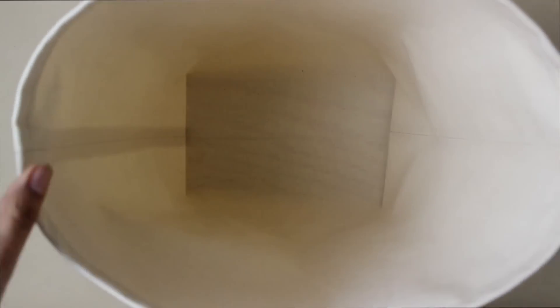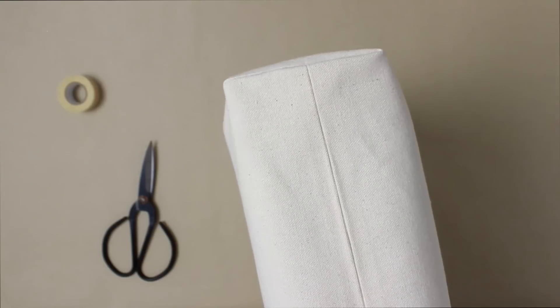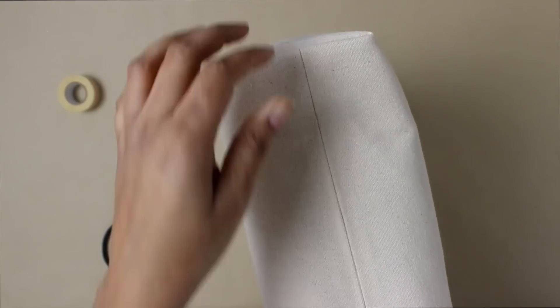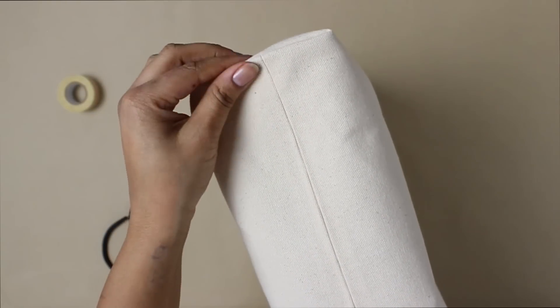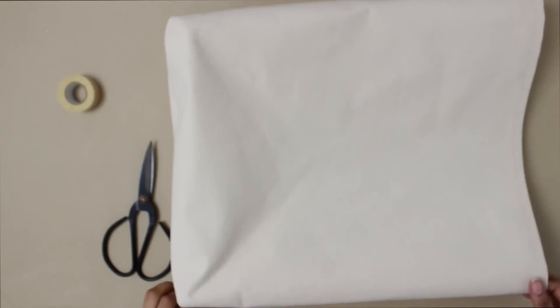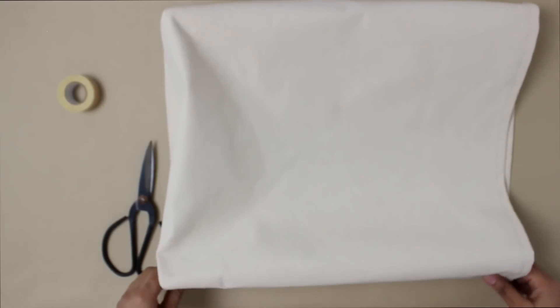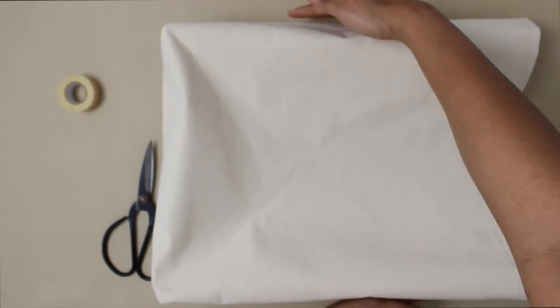But if you do decide to cut it, remember always press your seams open. See how nice and clean this looks? That's because we pressed the seam. Doing this creates a side gusset, which is the fancy way of saying we've now created some depth to the bag, so that when we place things in it there's actually a nice little box shape for it to sit into.